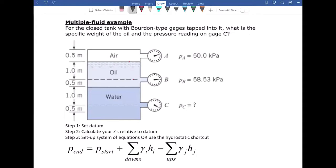In this configuration, we have air, pressurized air on top of oil that is on top of water. In this problem, it states for the closed tank with Bourbon type gauges tapped into it, what is the specific weight of oil?